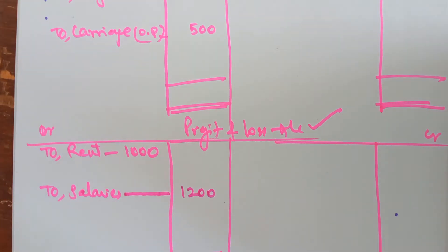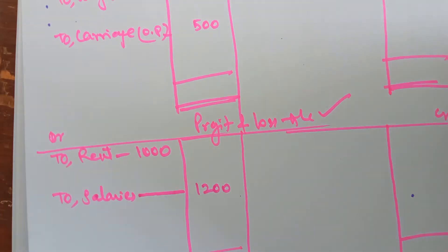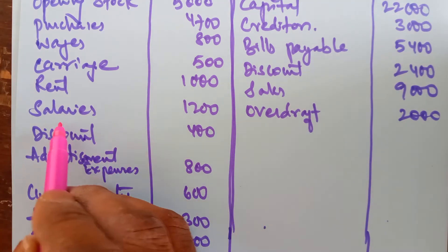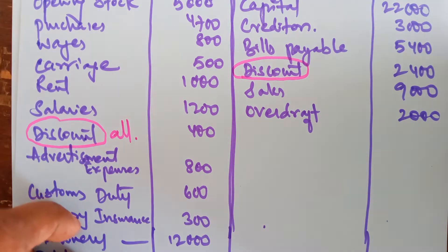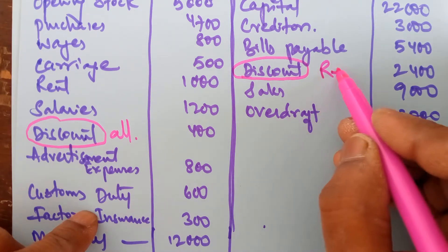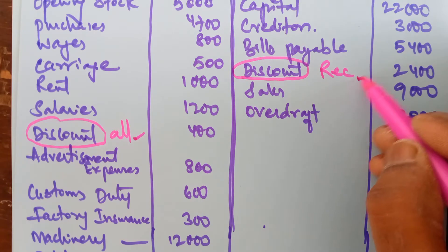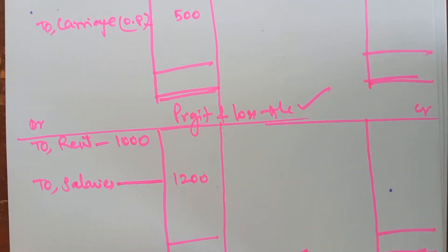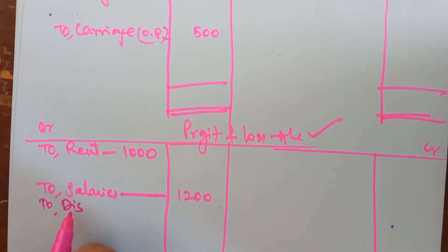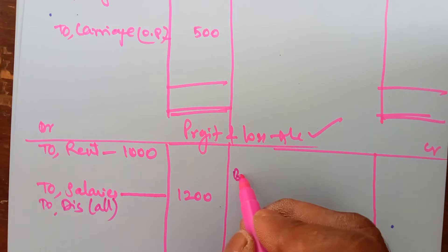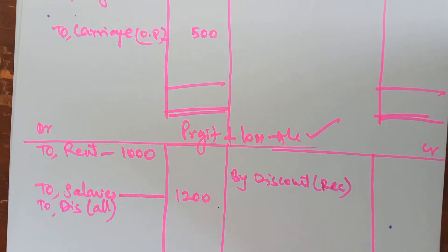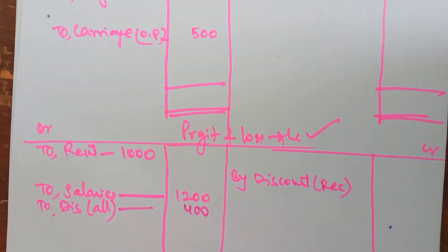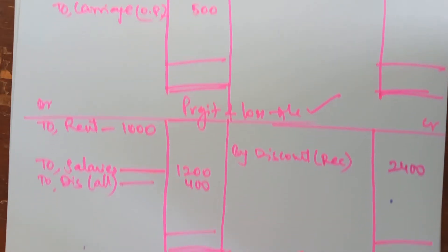Salary, if factory is not mentioned, is always indirect expenditure. There is no adjustment for salary, so put the amount straight away to the outer column. Next is discount. Discount will be given both on the debit side as well as on the credit side. Discount on the debit side you assume as allowed; discount appearing on the credit side should be considered as received. Discount allowed amount is 400; discount received amount is 2,400. There is no adjustment.